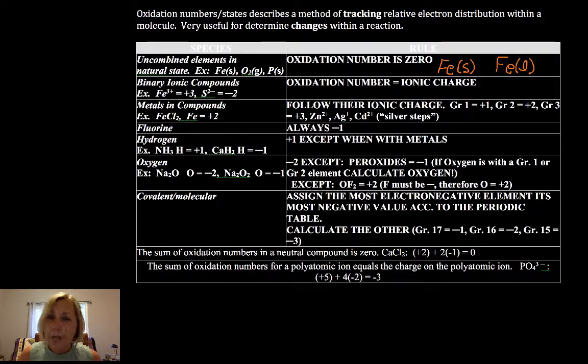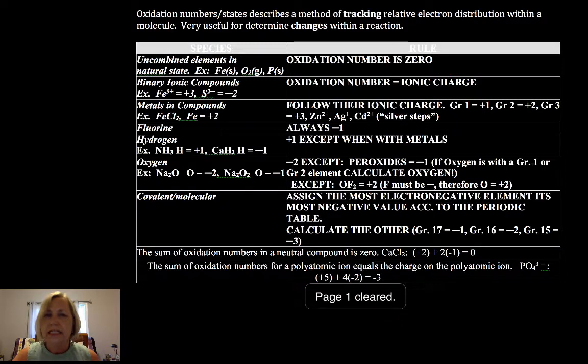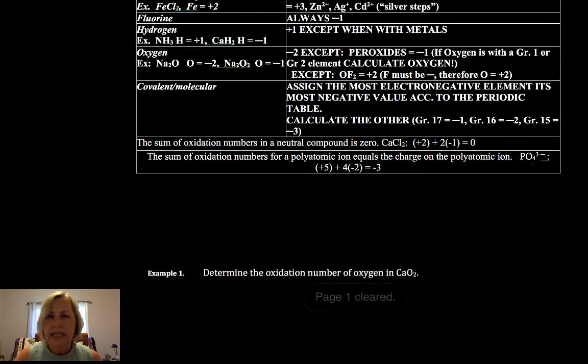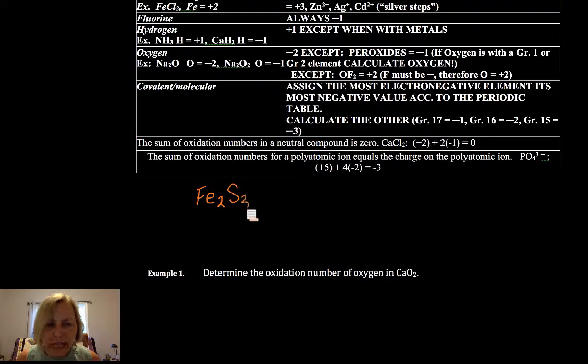If it is in a compound, its oxidation number, if it's an ionic compound, like I said before, is equal to its ionic charge. So let's take a look at that iron and sulfur example, because I want to make an important point there. If we have Fe2S3, and you calculated the charge in that, we have two irons. Iron can be plus 2 and plus 3.